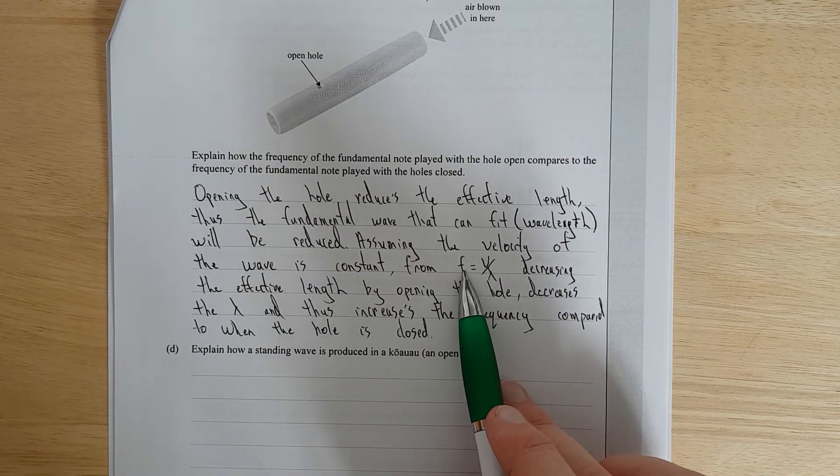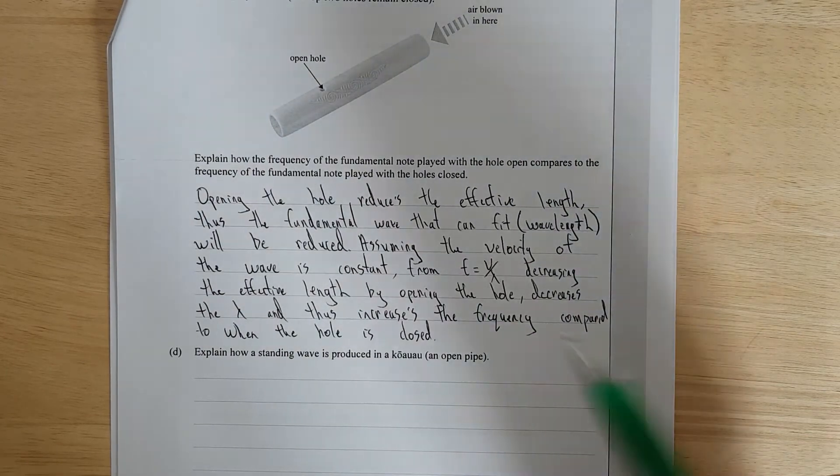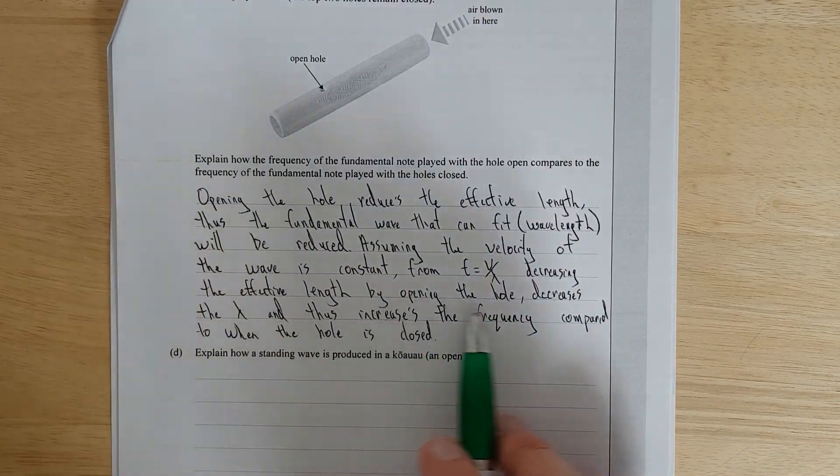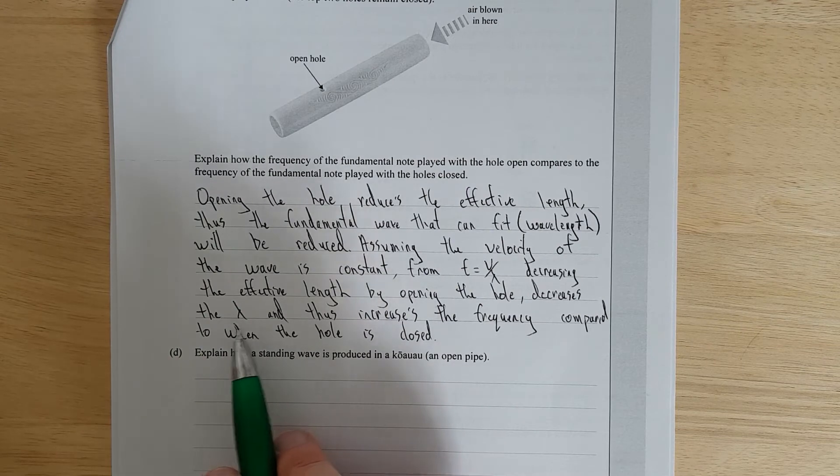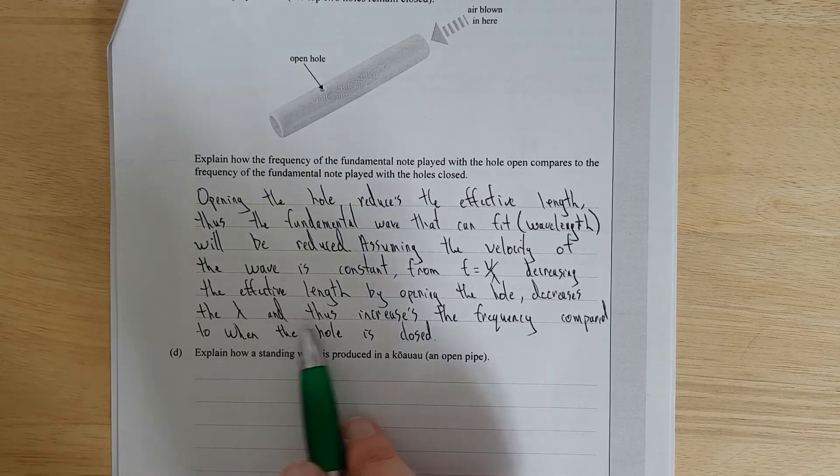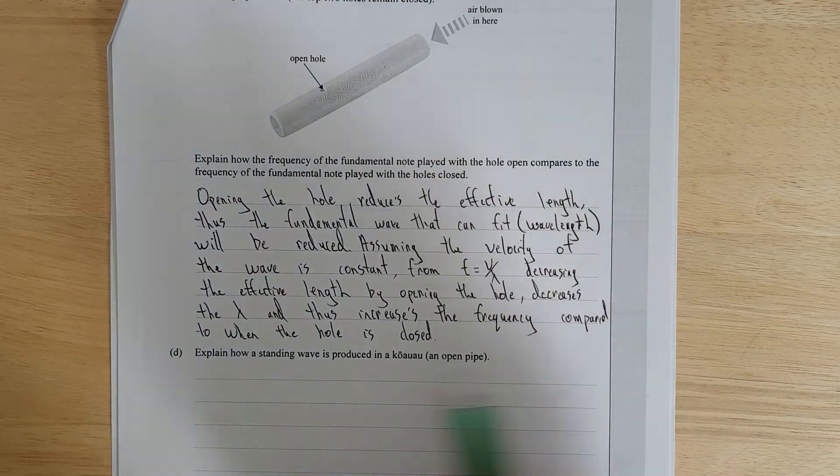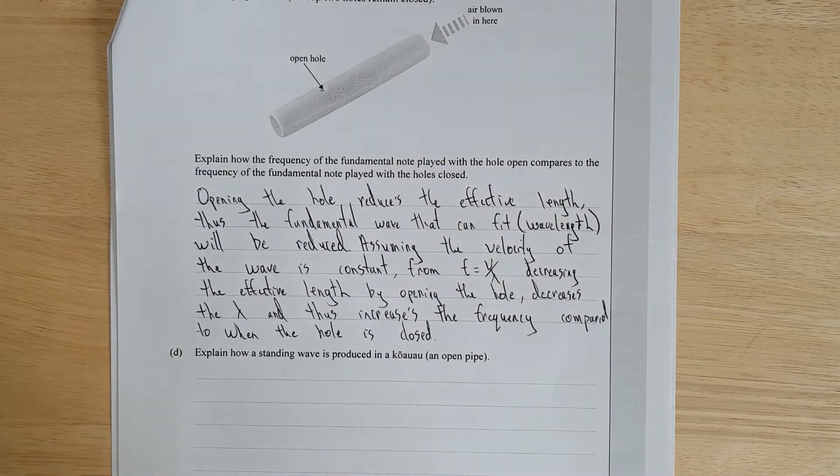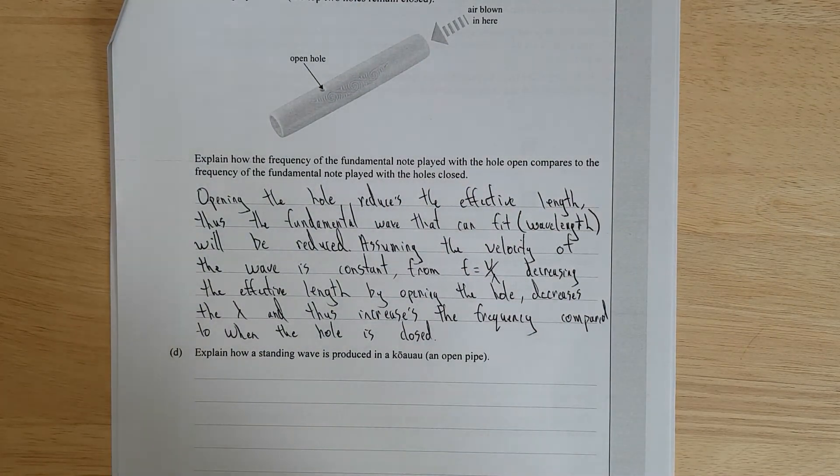Brackets wavelength will be reduced. Assuming the velocity of the wave is constant, you've always got to chuck it in there. I mean, it's already assumed, but you've just got to put it in there anyway. From the rearranged wave equation, if F equals velocity over wavelength, decreasing the effective length by opening the hole decreases the wavelength. And thus, increases the frequency compared to when the hole is closed. It's quite tricky for a merit question.